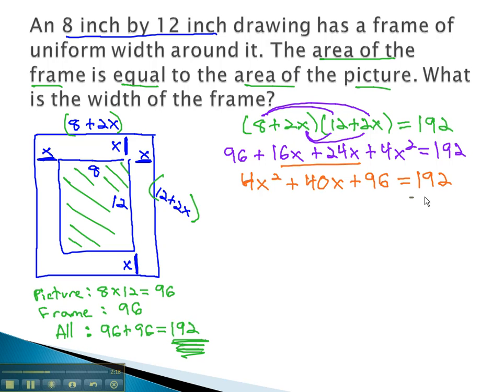In order to start solving, we want the equation to equal 0, so we will subtract 192 from both sides. This gives us 4x squared, plus 40x, minus 96, equals 0.